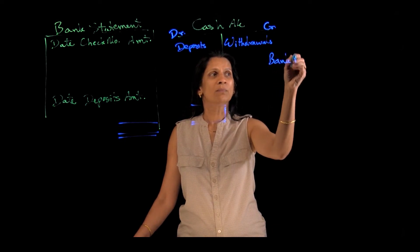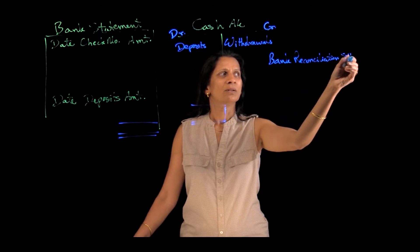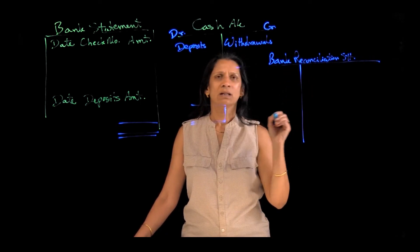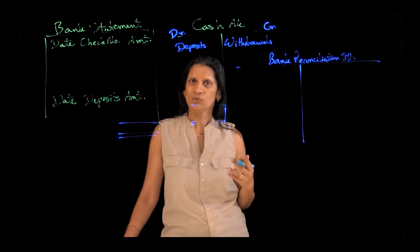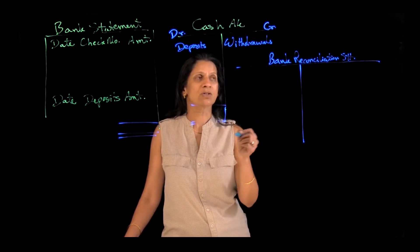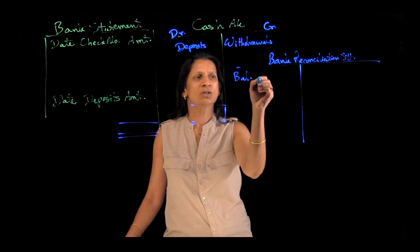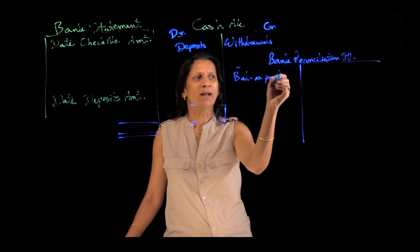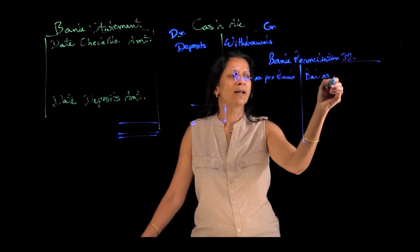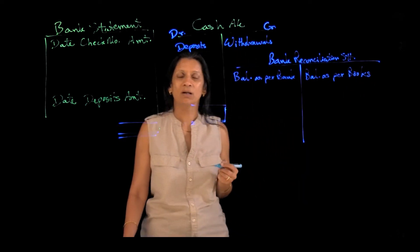So what do you do in a bank reconciliation statement? This statement can be prepared either in a T-account fashion or in a vertical fashion. Here I will be explaining the T-account format of the bank reconciliation statement. On the left side, we will be writing the balance of cash as per the bank, and on the right side we will be writing the balance as per the books — the company's books which the accountant is maintaining.